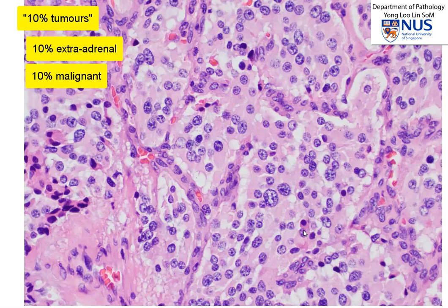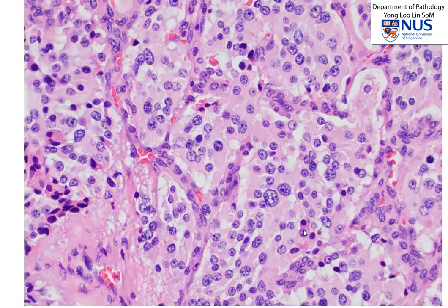It used to be thought that about 10% of these tumors have germline mutations. But recently, it's been found that up to about 25% of pheochromocytomas and paragangliomas actually harbor germline mutations. In these tumors with germline mutations, the patients are usually younger, they are more likely to have bilateral disease, and some of them actually have a higher likelihood of malignancy. Clinically, these tumors may be picked up incidentally, but also these patients may sometimes present with paroxysmal episodes of hypertension, where the blood pressure is very high, and this may be associated with headache, sweating, or even chest pain, and may mimic myocardial infarction.